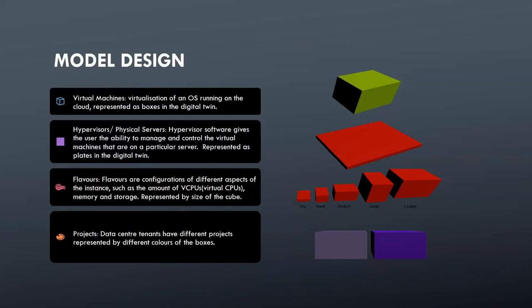Data center tenants have different projects, represented by different colors of boxes. For example, we can have multiple projects, and each VM can be assigned a different project. Each VM would have a different color depending on which project it is assigned to.